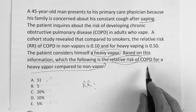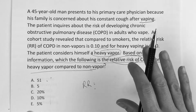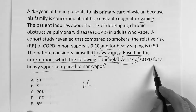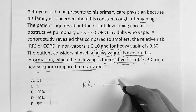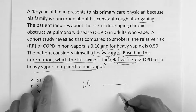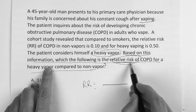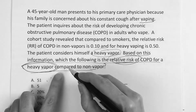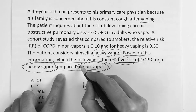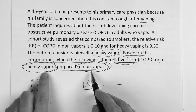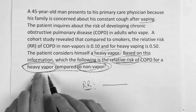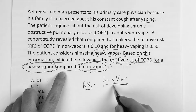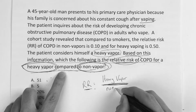Now, the key to this problem is: when you read math problems, you read them top to bottom, left to right. Whatever comes first goes on top, whatever is said second goes on the bottom. They want to know the relative risk of COPD for a heavy vapor compared to a non-vapor. So which one was said first — heavy vapor or non-vapor? The first one said was heavy vapor. So heavy vapor goes on top, divided by non-vapor. And that's really all they're asking.